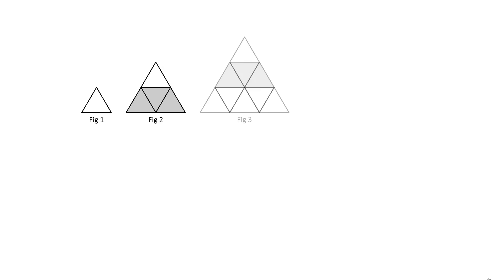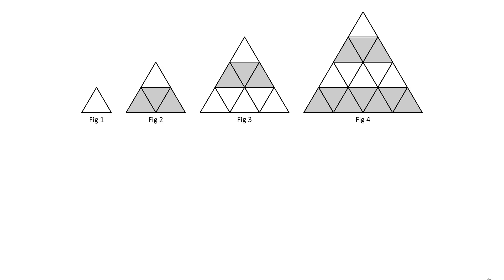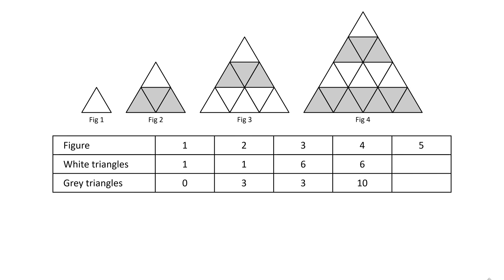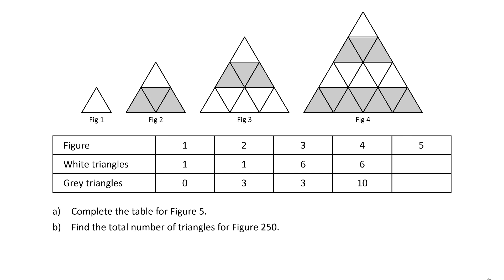We have a pattern shown with four different figures of triangles. You are given a table which shows figures 1 through 4 and the number of white triangles and gray triangles in each figure. This is a three-part question. Part A: complete the table for figure 5. Part B: find the total number of triangles in figure 250. Part C: find the percentage of gray triangles in figure 250.